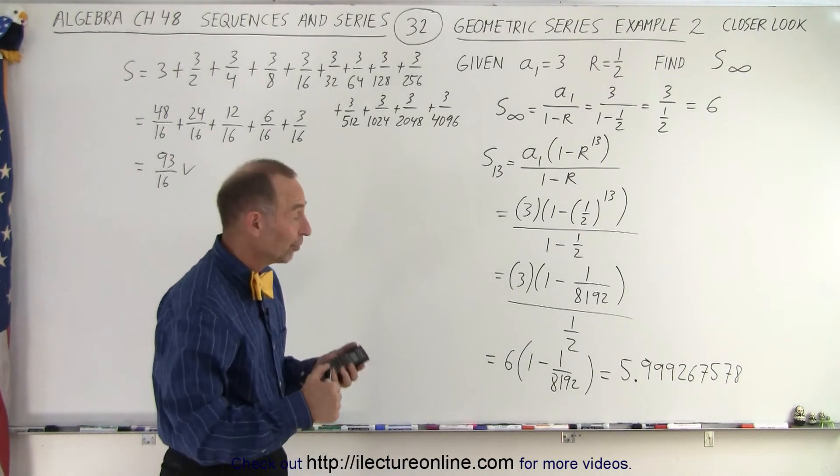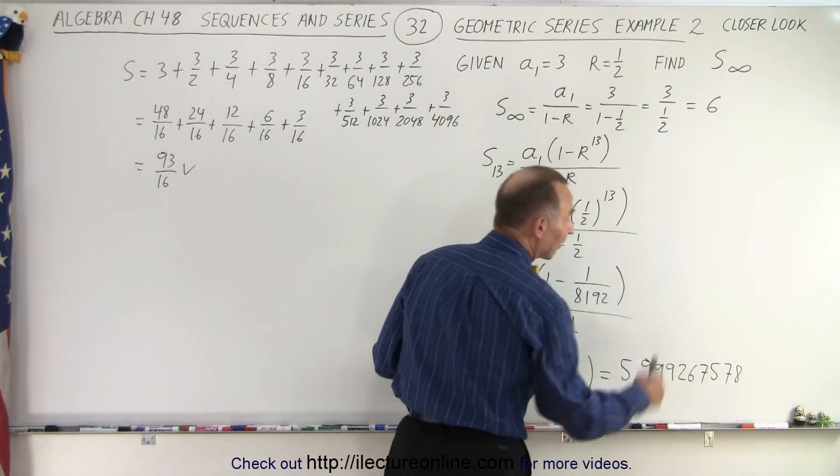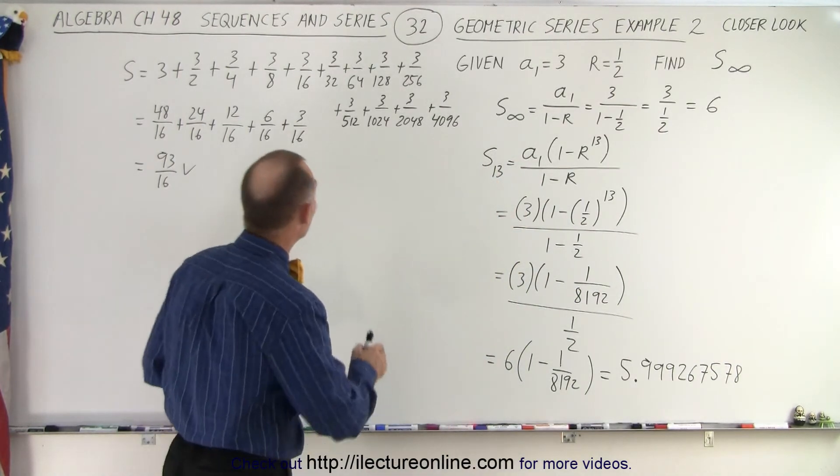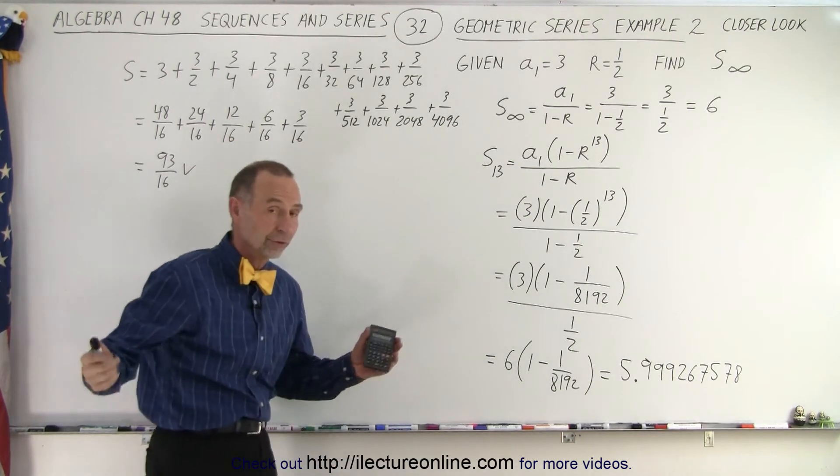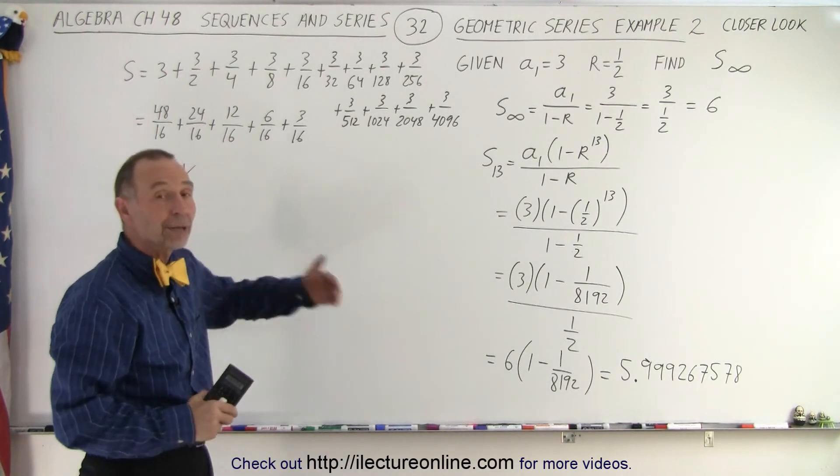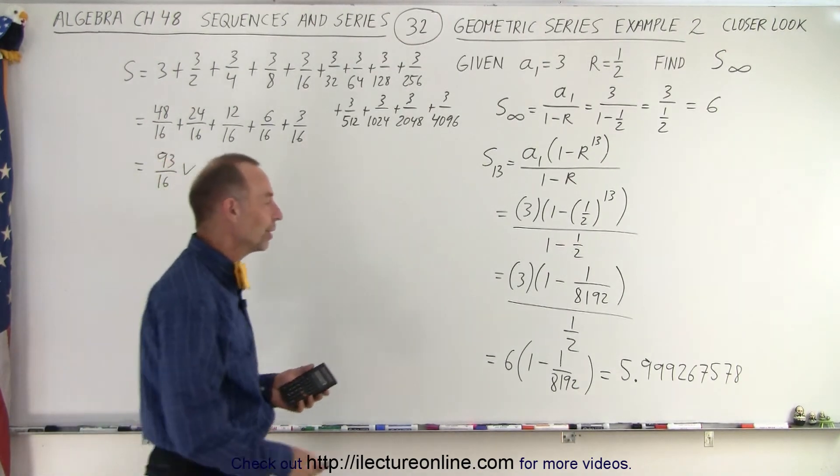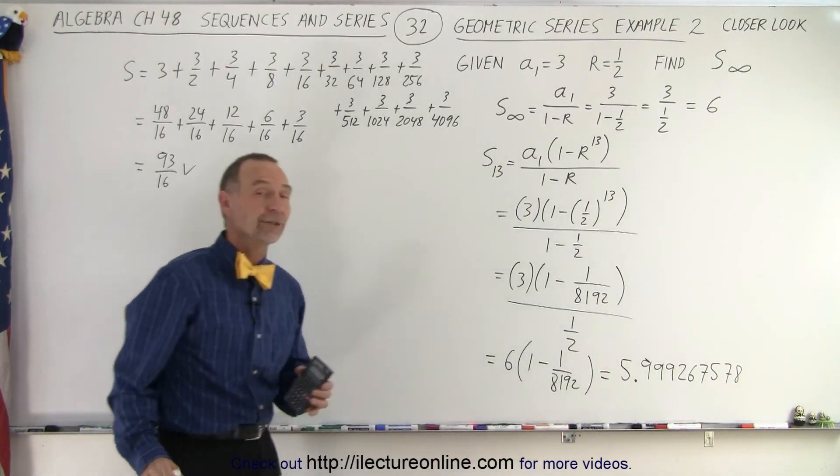Now notice to the first 3 decimal places it's 5.999267578. So you can see how close we are already to the number 6 when we only go out to 13, the first 13 numbers or the first 13 terms. If we keep adding more we'll get closer and closer and closer to 6. And when we add an infinite number of them you get the number exactly equal to 6 which is what we get over there.